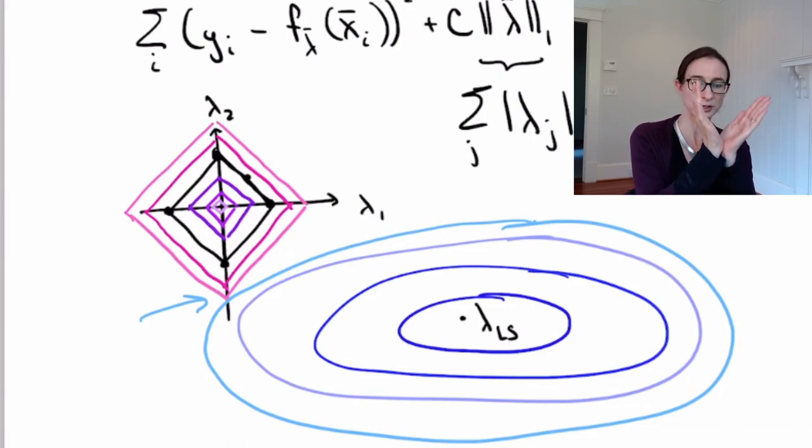So if you're hitting these corners, right, the corners are the points where some of the lambdas are zero. So that means the solution is sparse.